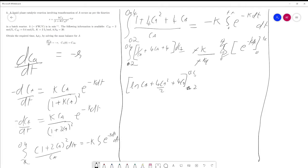The integral of 1 by Ca is ln Ca plus 4Ca squared by 2 plus 4Ca, solving that with 2 and 0.4 as the limits. We know K by KT is 20. Solving this, we get e raised to minus KDT minus 1.